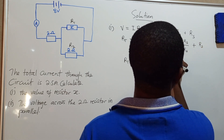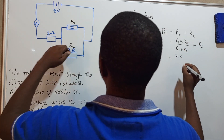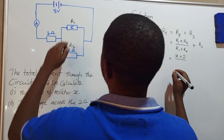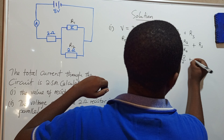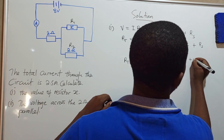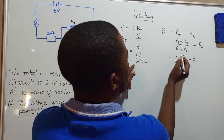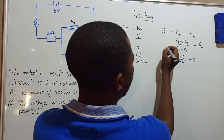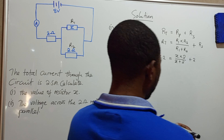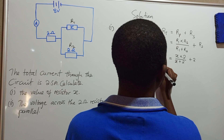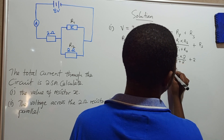Then plus the series resistor. Now substituting: R1 is X, R2 is 2 ohms, so it's X times 2 over X plus 2, then plus 2 for the series resistor. Since total resistance is 3.2 ohms, we have: 3.2 equals 2X over X plus 2, plus 2.